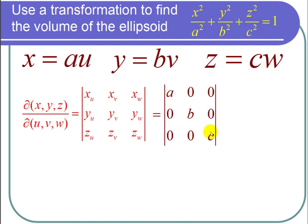So I get this matrix, which happens to be a diagonal matrix, and the determinant of a diagonal matrix is just the product of the diagonals, or in this case, a, b, c.